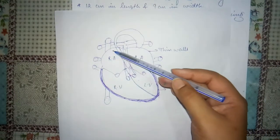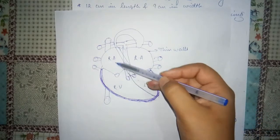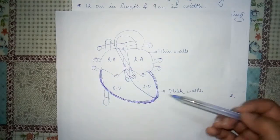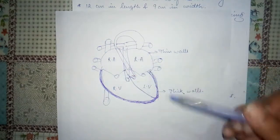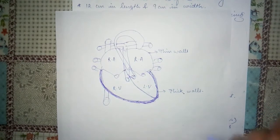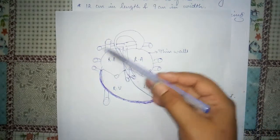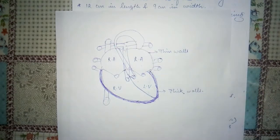Because oracles ka sirf eek kaam hai - blood ko pump karke ventricles tak pahuchana - that is why in ko bhoot zahadha hard or rigid structure ki zahararat nahi hoot hi hai. That is the basic reason why walls of oracles are quite thin walled.